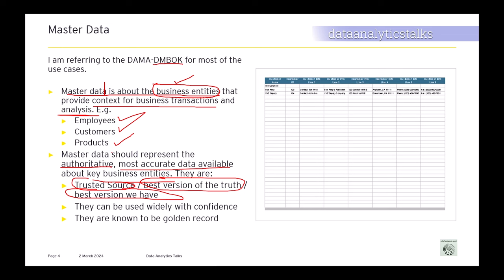Here we are talking about master data as a trusted source. If you have a trusted source, you can use it widely with confidence. If the entity has the best, latest, accurate information and accurate metadata, then you're confident to use it. If the data for a particular entity is not accurate, you cannot use it with confidence. The golden record is also known as master data. Sometimes master data may be stored as an Excel sheet, sometimes as a DBMS table — there are various ways to store master data.